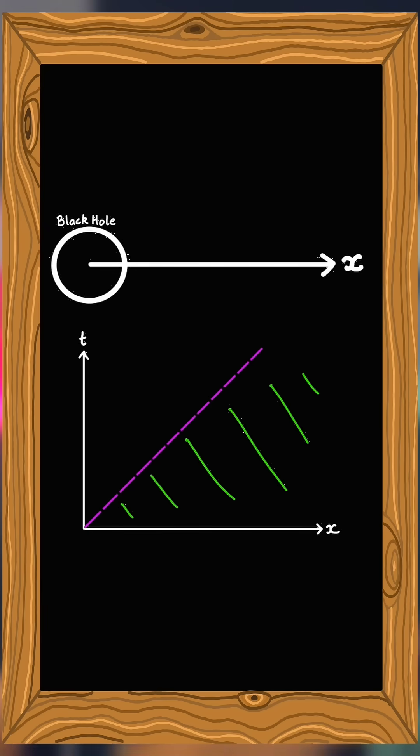We can treat this region of our graph as representing everything outside the event horizon. This 45 degree dotted line represents the event horizon itself. And this part here represents the inside of the black hole.